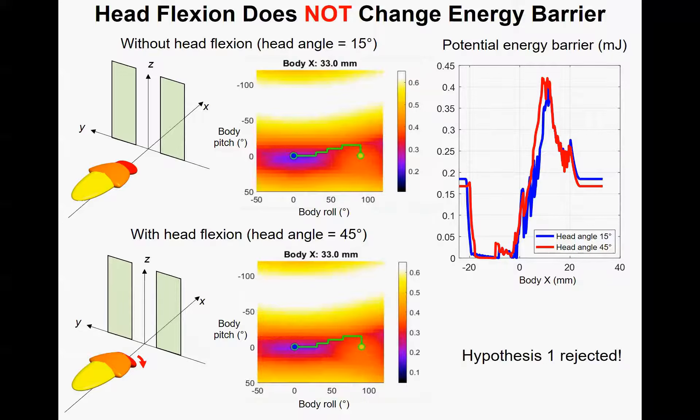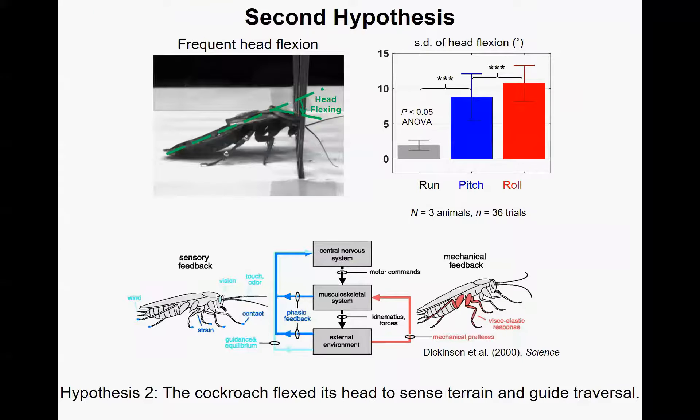When we compare the barriers we got from both cases, we can see that the barrier did not change a lot. So we conclude that head flexion does not change the energy barrier, and our hypothesis 1 was rejected. The question remains: why was the cockroach flexing its head during traversal? Recall that the animal is using sensory feedback to interact with the environment. We got our new hypothesis that the cockroach flexes its head to sense the terrain and guide traversal.